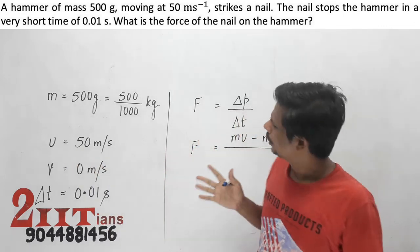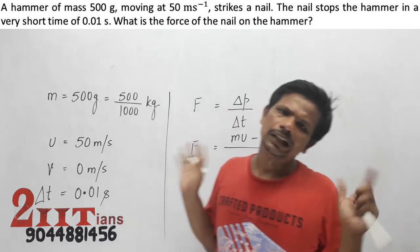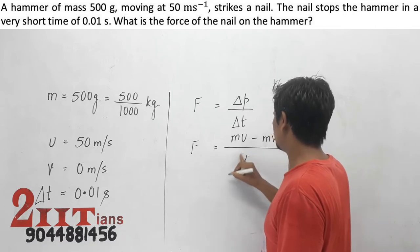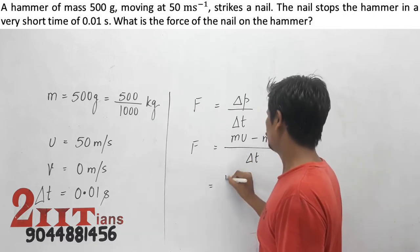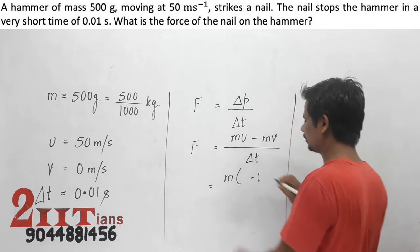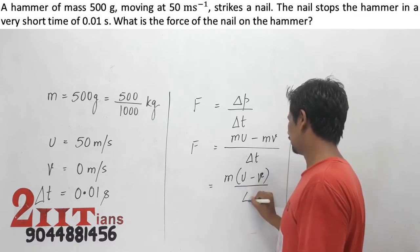To get the magnitude of force as a positive answer, we take delta T and factor out M common: F equals M times U minus V divided by delta T.